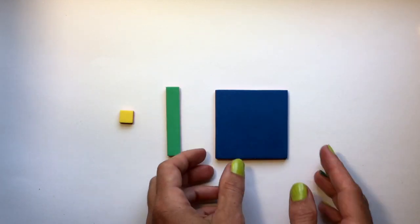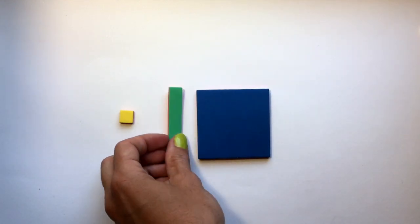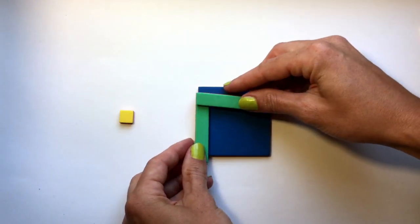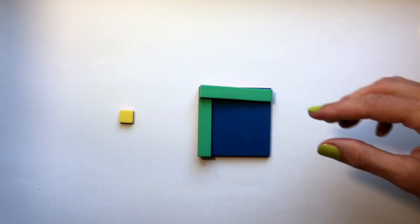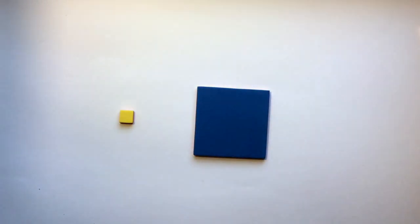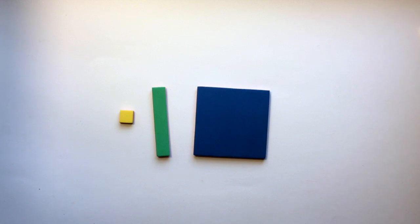And then this large piece here is x squared. You can see that two x pieces multiplied together would make the x squared tile. So those are the three tiles that we have.